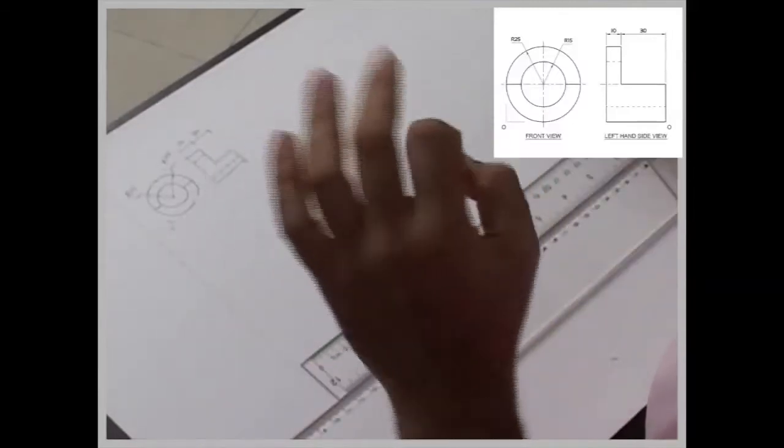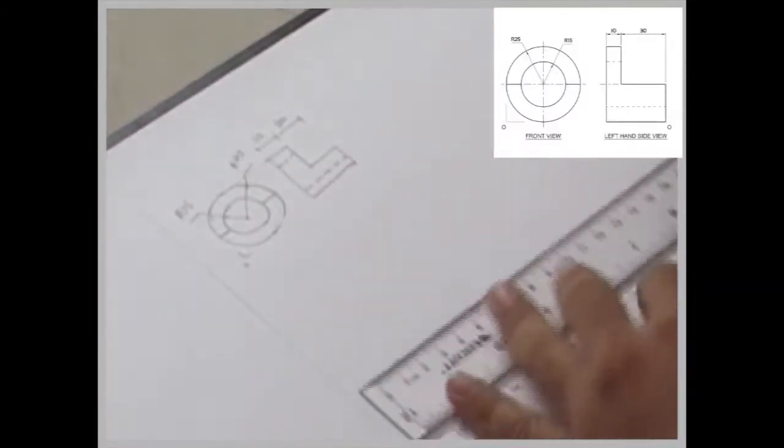Now in this sum they have given two views. One view they have only circle, so I'll take that view as front view and I'll start.